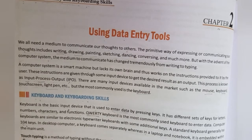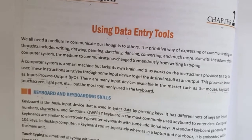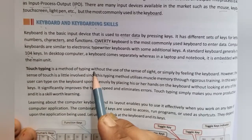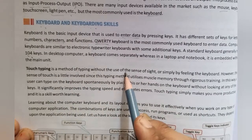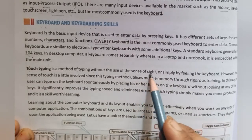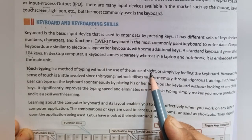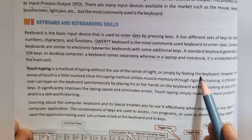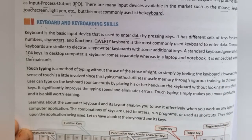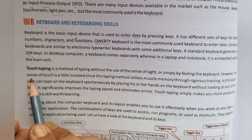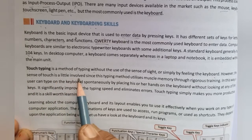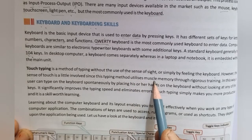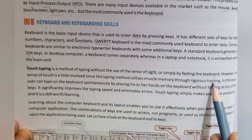Now we are going to read about touch typing. Touch typing is the method of typing without the use of the sense of sight — meaning without looking at the keyboard. Simply by feeling the keyboard, you can press the keys. The sense of touch is utilized, since this typing method uses muscle memory through repeated training.